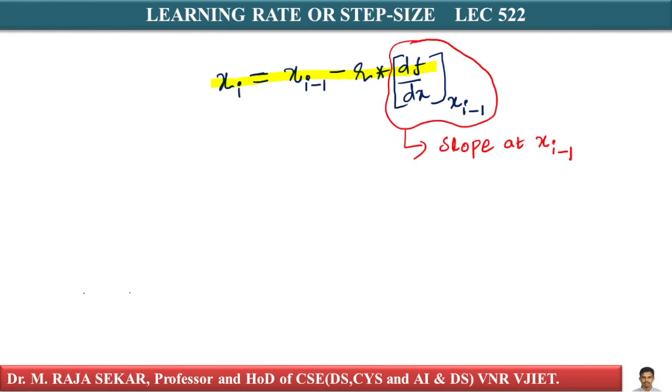In this lecture, we will try to understand learning rate or step size. In the previous lecture, we saw in gradient descent, xi = xi-1 - r·(df/dx) at xi-1. What is this df/dx? It is the slope at xi-1.